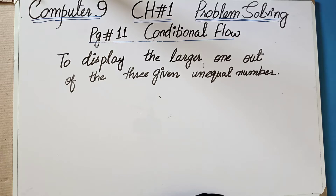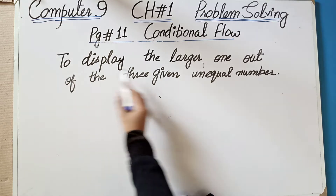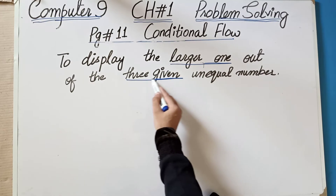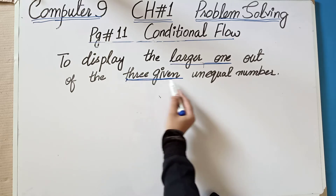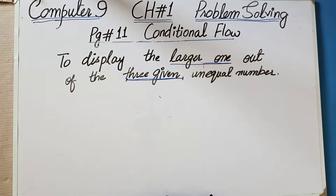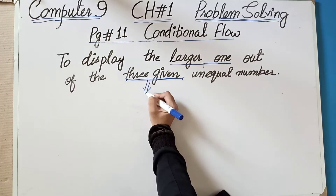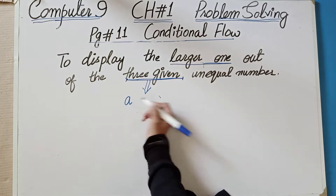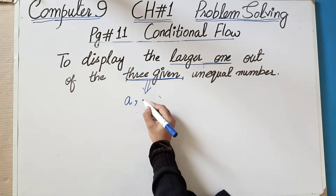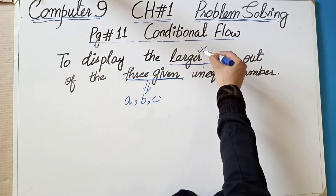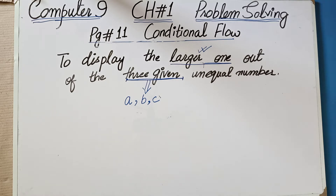First of all, you need to know what to do. We have to display the largest number. From three given numbers — A, B, and C — we have to find out the largest one.